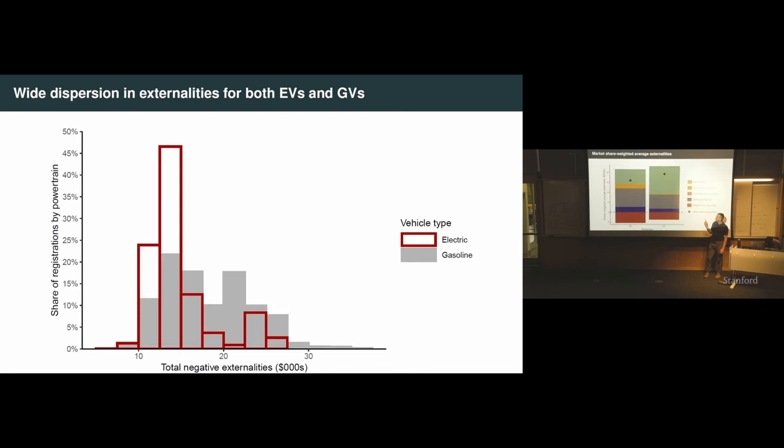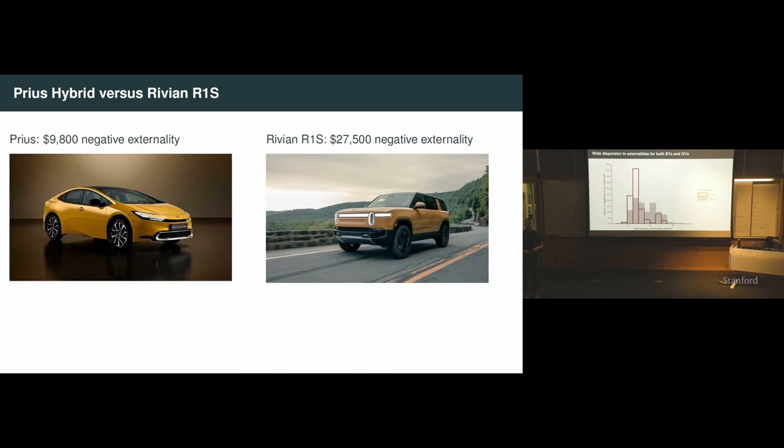Which one are we subsidizing under the IRA? We're subsidizing the one that is much dirtier. This is one of the generic policy design issues with homogeneous subsidies. We're subsidizing all of these EVs in red by $7,500, despite the fact that some of these EVs are really good for the world and some are really bad for the world relative to gas cars. Meanwhile, the Prius down here, we're not helping them at all. This is one of the limitations of just in a blunt way subsidizing EVs as opposed to differentiating between the different harmfulness of the cars.